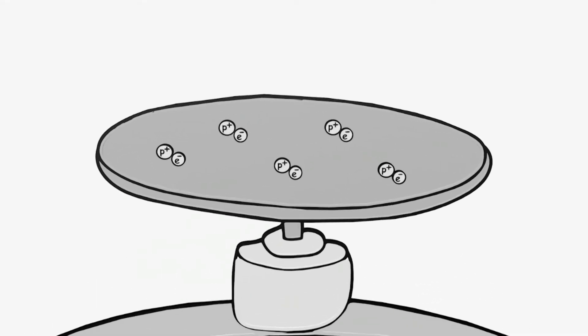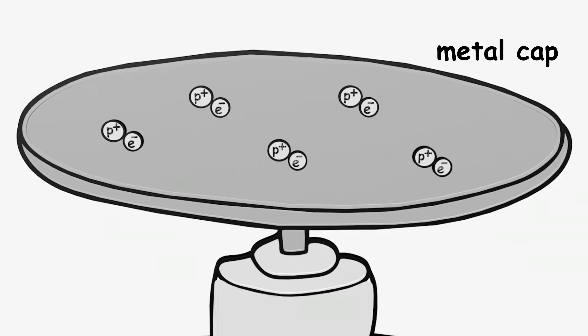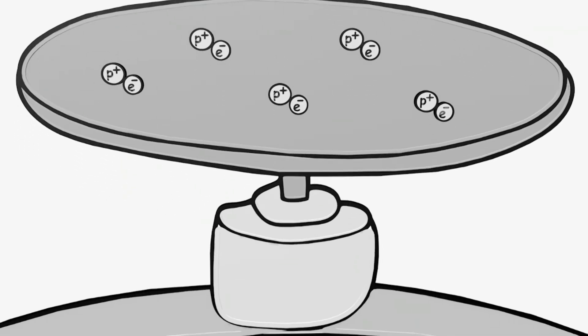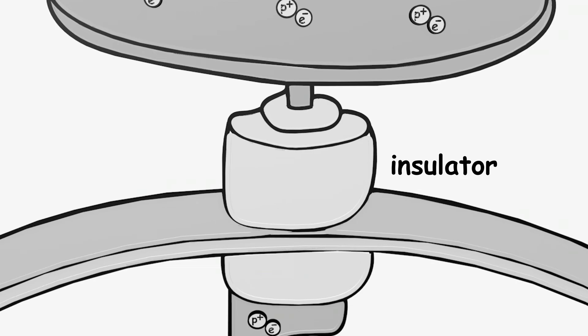The electroscope has a metal cap on top. First of all, there are as many negative as positive charges. Under the metal cap, there is an insulator that prevents charges from being transferred to the outer case.